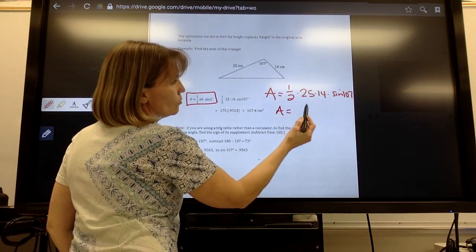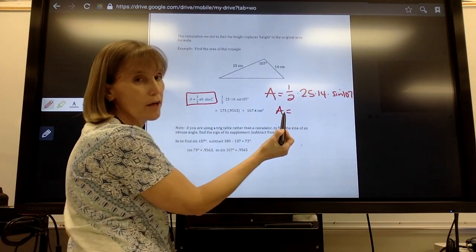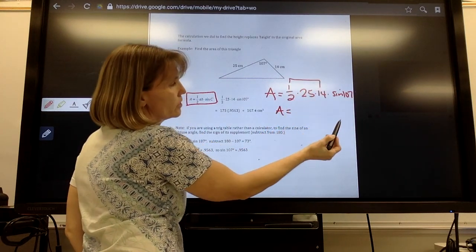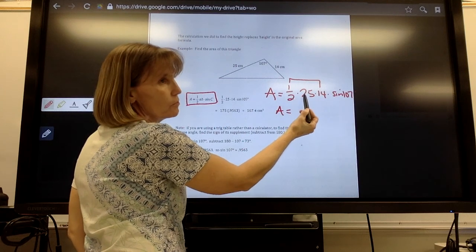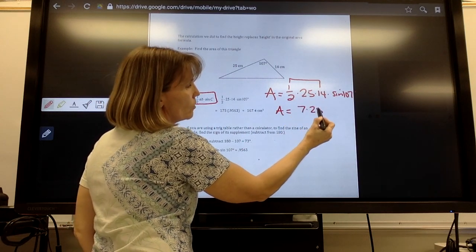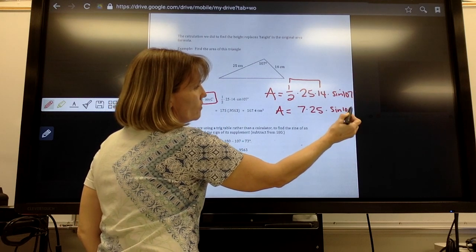So A is equal to, when you multiply this out, the order that you multiply does not matter. So I can take half of 14. Half of 25 is going to leave me with a decimal. So half of 14 is 7 times 25 times the sine of 107.